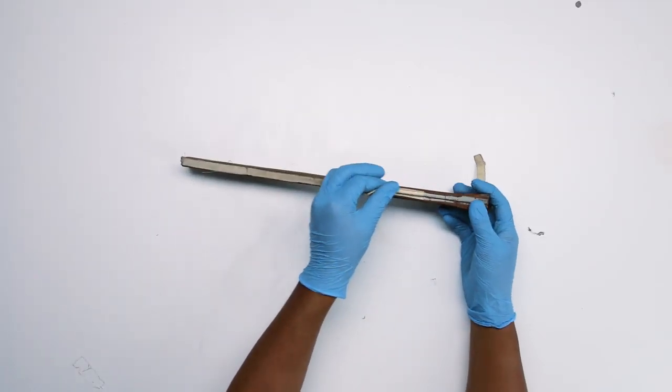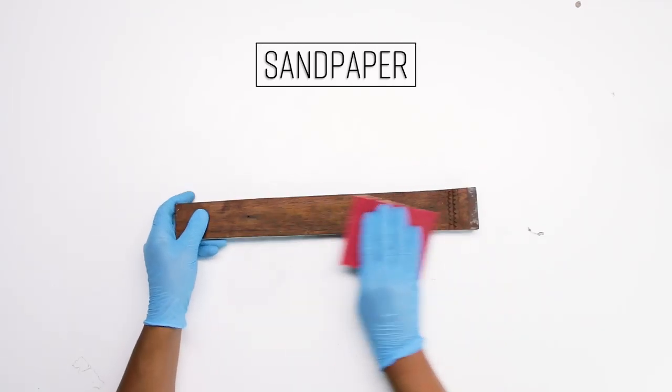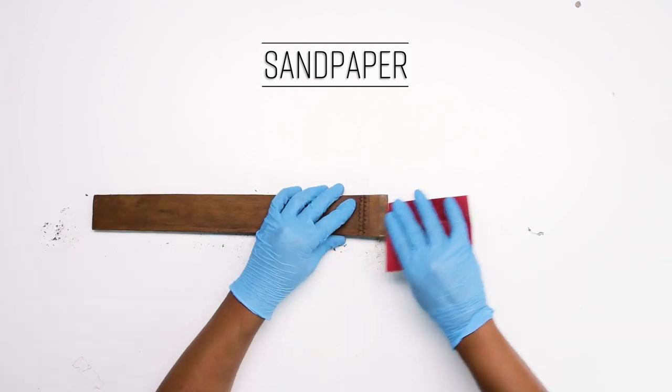The sheath looks very fragile and it's only being held together by tape. To give it a cleaner look we're going to sand it down.